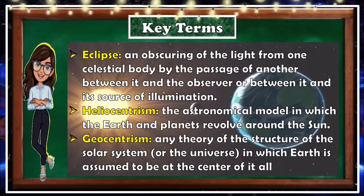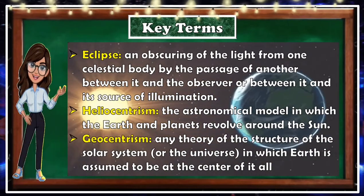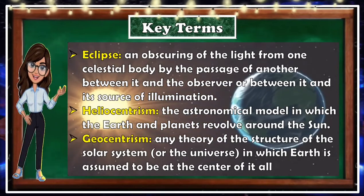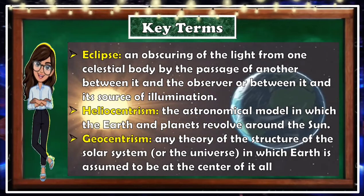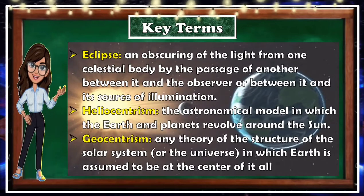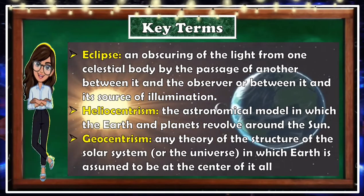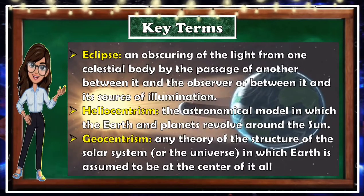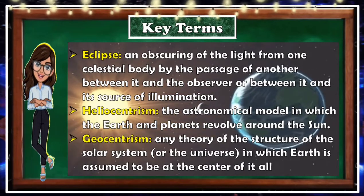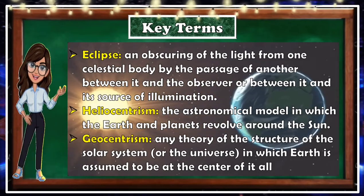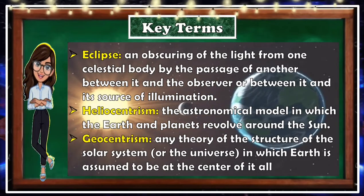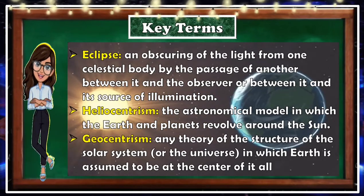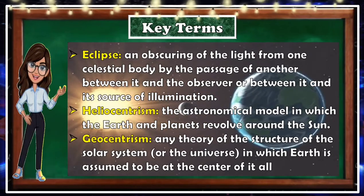Next: eclipse — an obscuring of the light from one celestial body by the passage of another between it and the observer, or between it and its source of illumination. Next: heliocentrism — the astronomical model in which the Earth and planets revolve around the Sun. Next: geocentrism — any theory of the structure of the solar system or universe in which the Earth is assumed to be at the center.